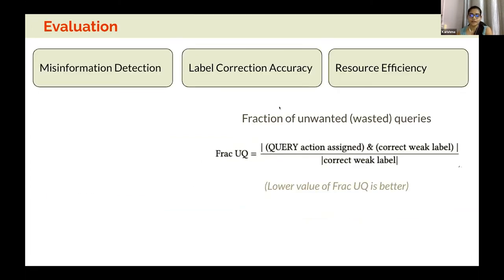For evaluation, we don't have actual ground truth labels for all 14,000 cascades, so we use as proxies: misinformation detection accuracy from the model, label correction accuracy on a validation set, and resource efficiency — specifically the fraction of unwanted or wasted queries sent to human annotators given the initial labels.